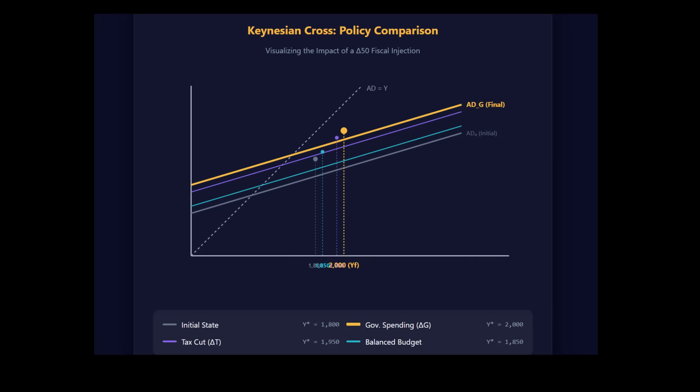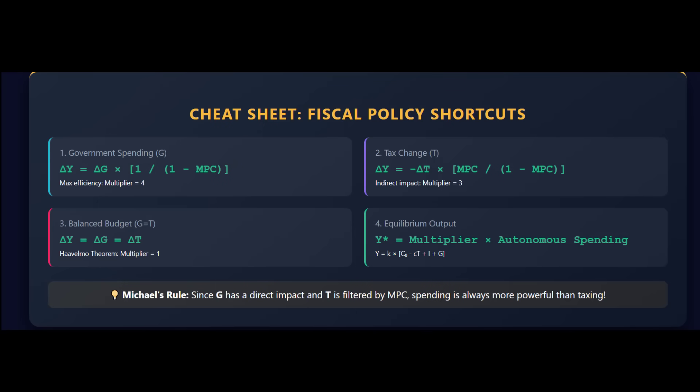We can piece it together from what we already know. The $50 increase in government spending — that's the powerful part — adds 200 to GDP, the 50 times 4. But at the same time, you're increasing taxes by 50, which has a negative effect. A tax cut of 50 gave us a positive 150 boost, so a tax increase of 50 creates a negative 150 drag. So you have a positive 200 from the spending and a negative 150 from the taxes — 200 minus 150 leaves you with 50. The spending is more powerful than the taxing because of savings leakage: when taxed $50, people cut their spending by $37.50 and their saving by $12.50, so the drag isn't as bad as the boost is good.